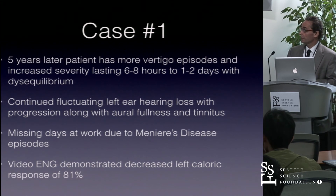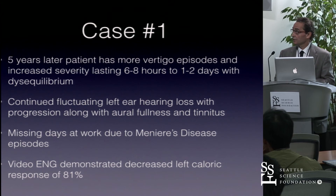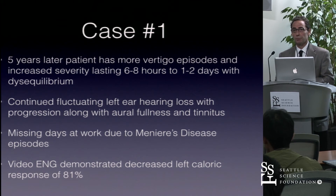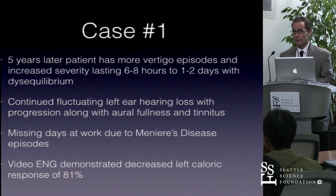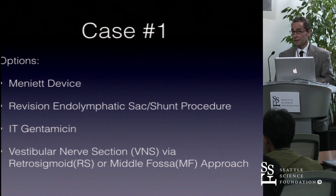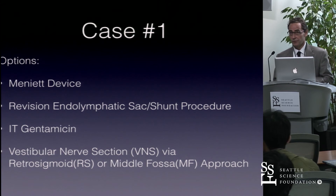Five years later, the patient had more vertigo episodes with increased severity lasting six to eight hours to one to two days with disequilibrium, continued fluctuating hearing loss with progression, aural fullness, and tinnitus. He was missing days at work. The videonystagmography demonstrated a decreased caloric response of 81%. Options at this time included the Meniett device, revision endolymphatic sac shunt procedure, intratympanic gentamicin, or vestibular nerve section via retrosigmoid or middle fossa approach. The patient's audiogram showed left moderate sensorineural hearing loss with asymmetric word recognition of 80% versus 100%.